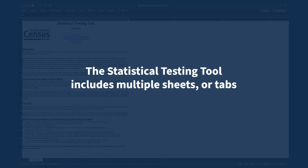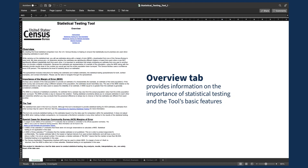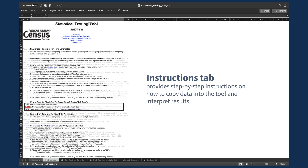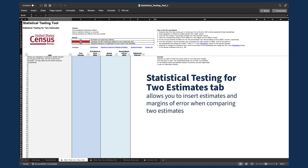The Statistical Testing Tool includes multiple sheets or tabs. The Overview tab provides information on the importance of statistical testing and the tool's basic features. The Instructions tab provides step-by-step instructions on how to copy data into the tool and interpret results. The Statistical Testing for Two Estimates tab allows you to insert estimates and margins of error when comparing two estimates.